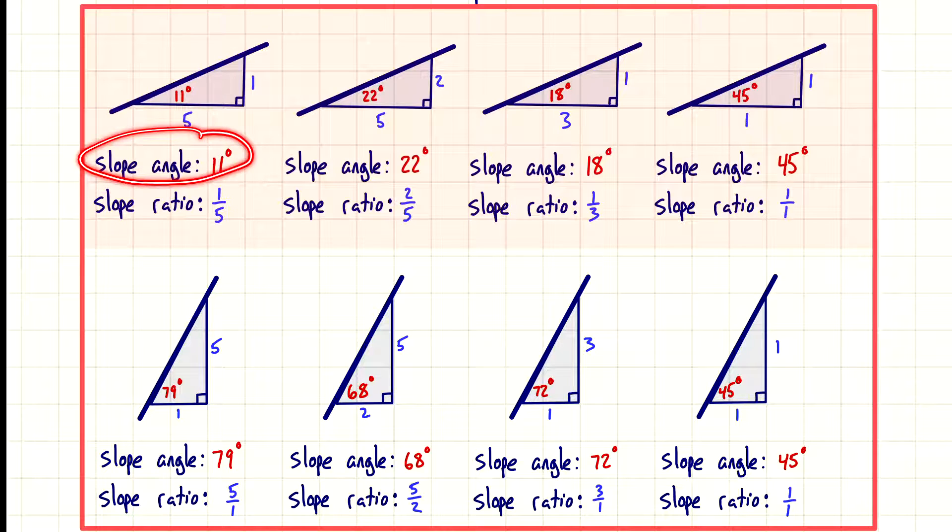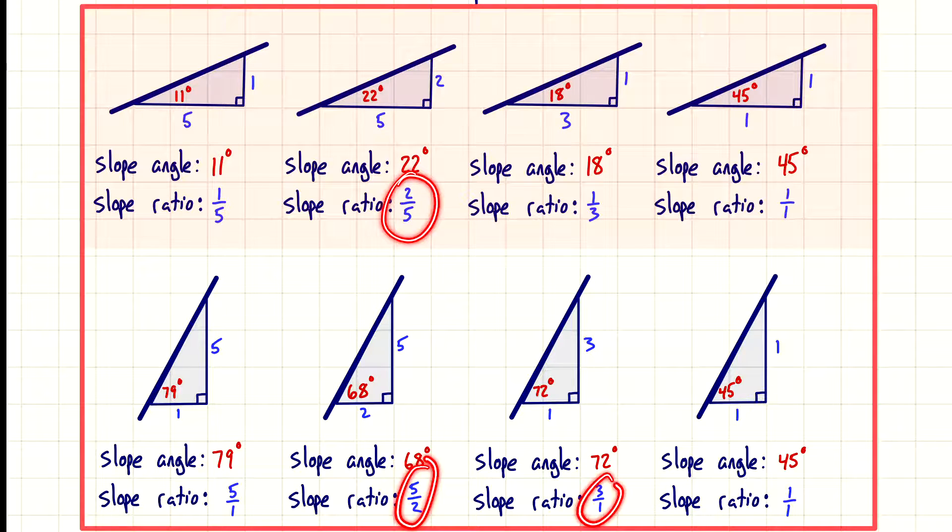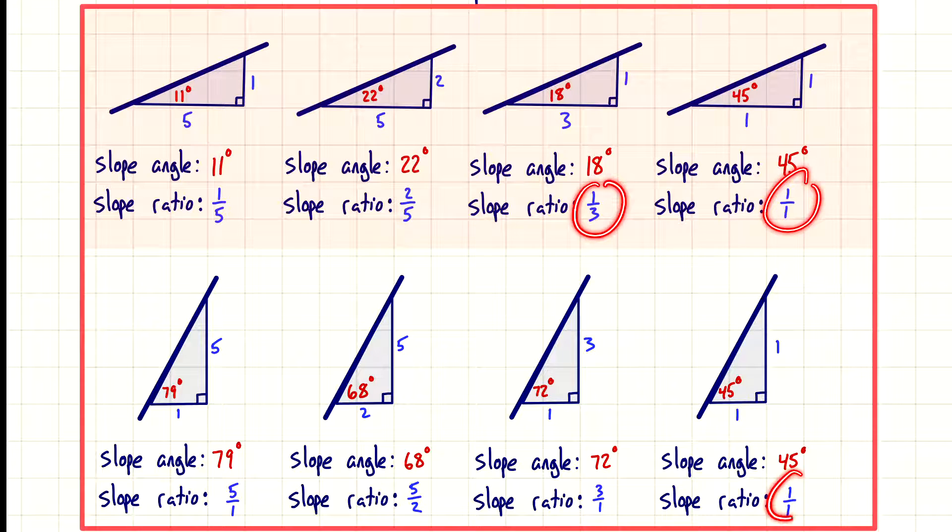If I know the slope angle is 11 degrees and it has a slope ratio of 1 over 5, then the complement, which is 79 degrees, will be the reciprocal of 1 over 5, which is 5 over 1. You should notice all these are reciprocals. The angles, slope angles, these are all complementary to each other. This is the information we gathered last time.